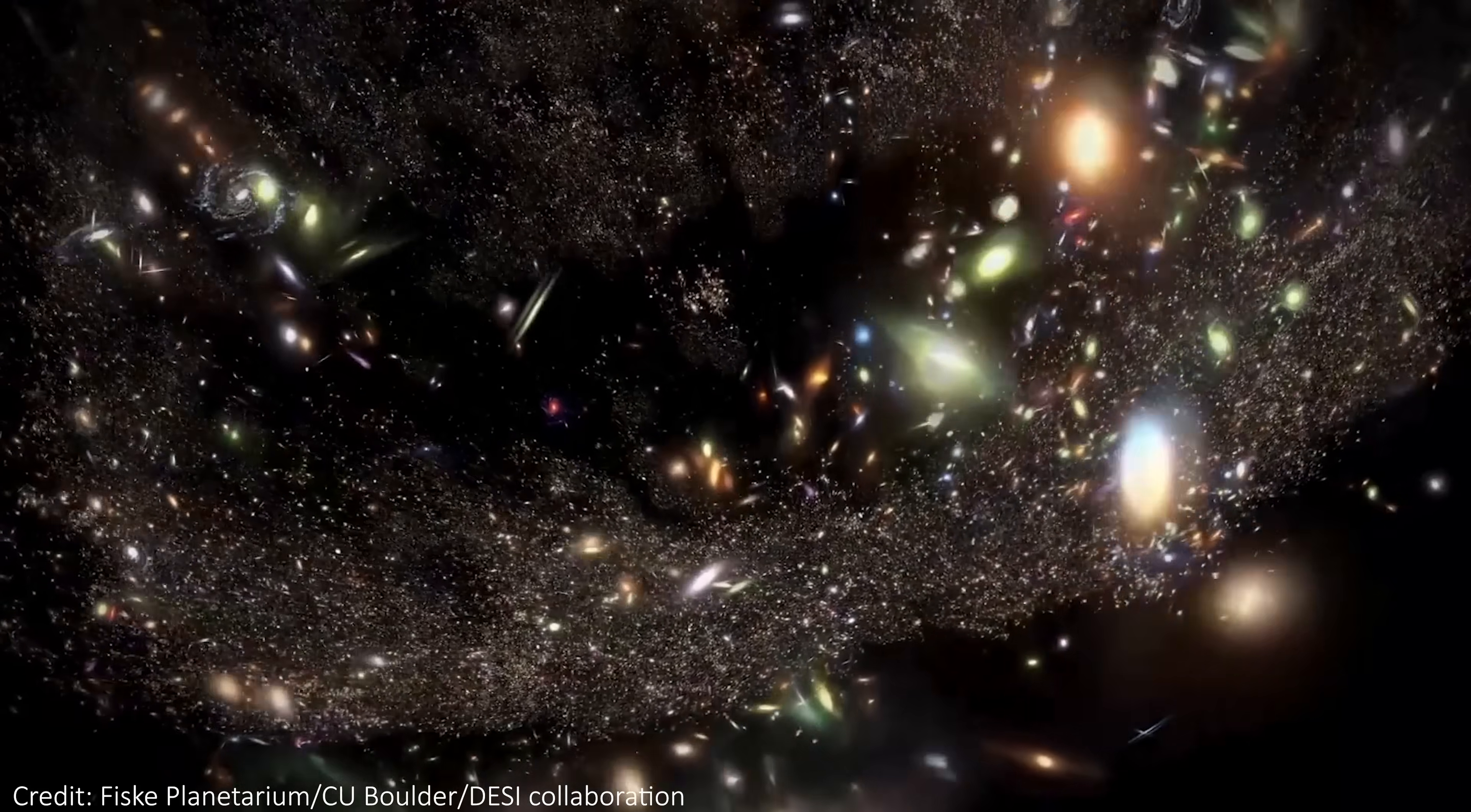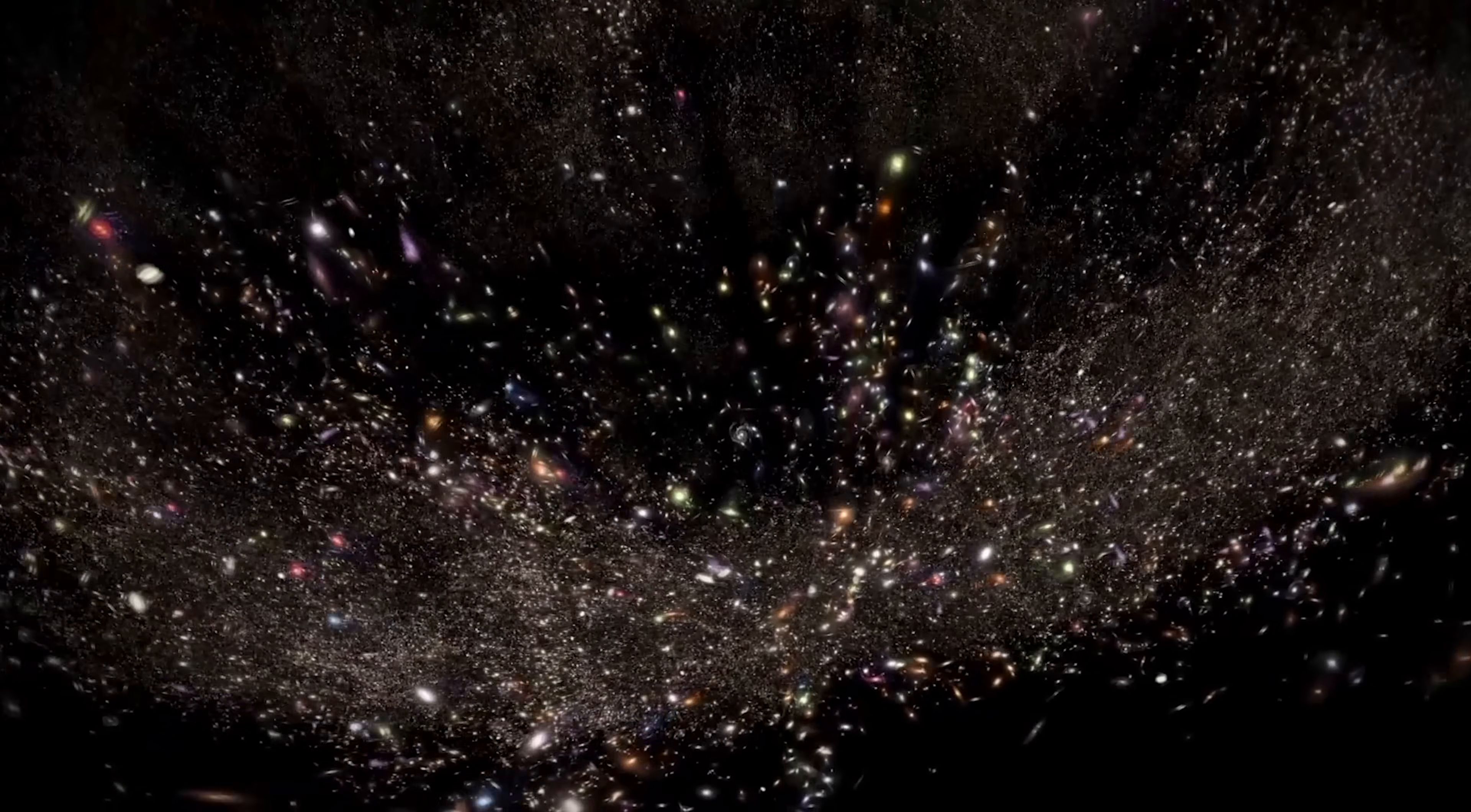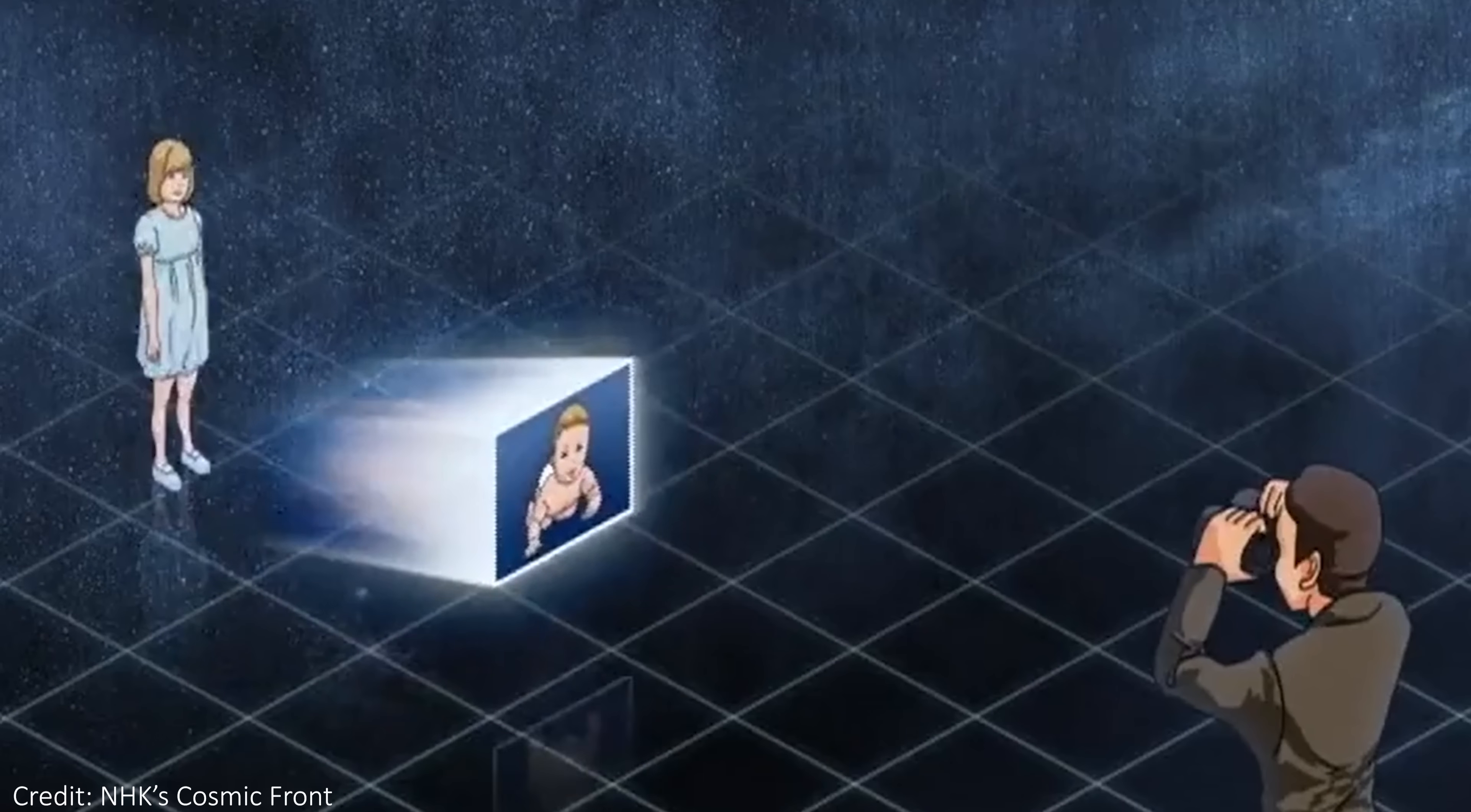When we look out into the universe, we're looking backwards in time. That's because light travels at a finite speed, and we see objects as they were when that light was emitted, not as they are at the moment we receive that light. There is no updating that light. Once it's left a planet or a star or whatever, the information it carries with it is locked in and it doesn't change.